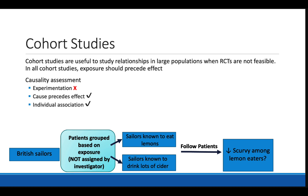Cohort studies are useful for following large populations for long periods of time and are especially useful when RCTs are not feasible. For example, cohort studies can group patients into cigarette smokers and non-smokers and follow them to compare cancer incidence. Unfortunately, cohort studies only fulfill two of our three causal criteria. We know cause precedes effect because we group based on the exposure and follow for the outcome. However, because we're not randomly assigning exposures or interventions, it's not an experiment.